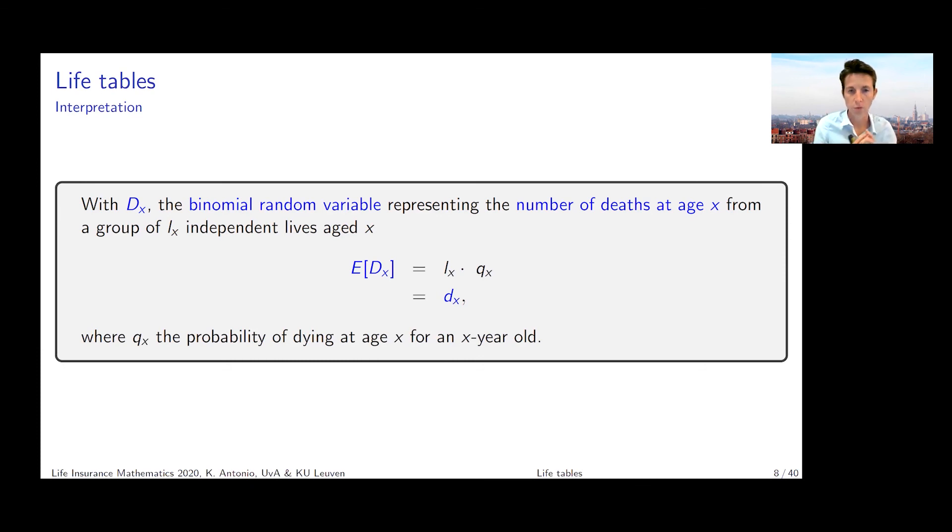If I start with lx individuals, dx gives me the expected number of deaths at a particular age x. You've got all this information together in the life table. If you have the lx's, you can go to the survival probabilities; if you have the dx's, you can go to the mortality rates, and vice versa.